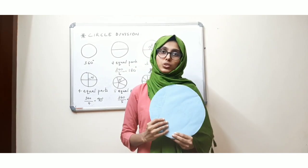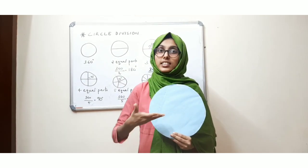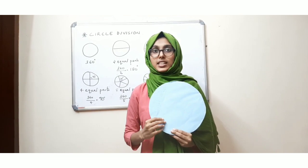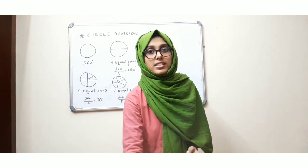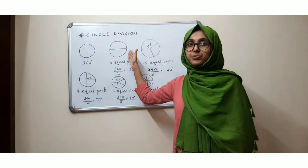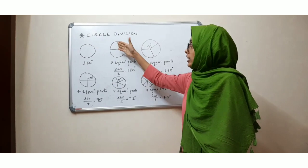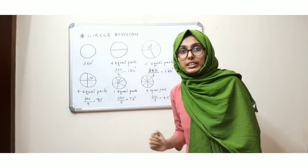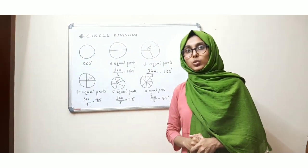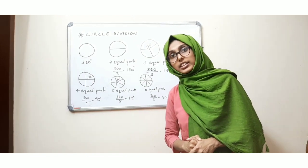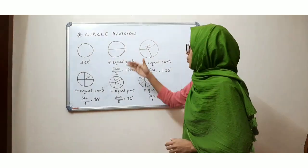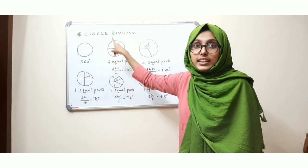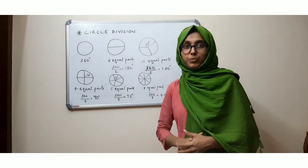So now we are going to divide a circle into two equal parts. I have divided here the circle into two equal parts. So what will be the degree of one part? A full circle is 360 degrees.